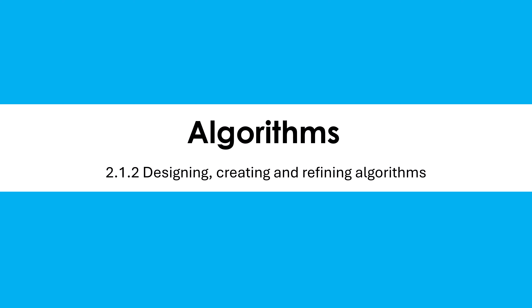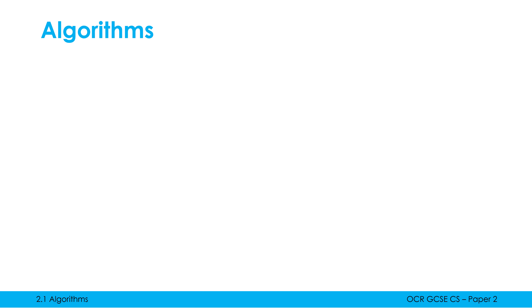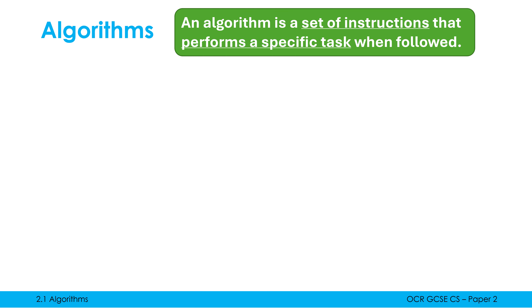Hello and welcome to this video, which is the first one in the Paper 2 playlist. We're going to talk about algorithms today — arguably the most important concept in computer science, and it's often a two-marker definition question in Paper 2. So what is an algorithm?